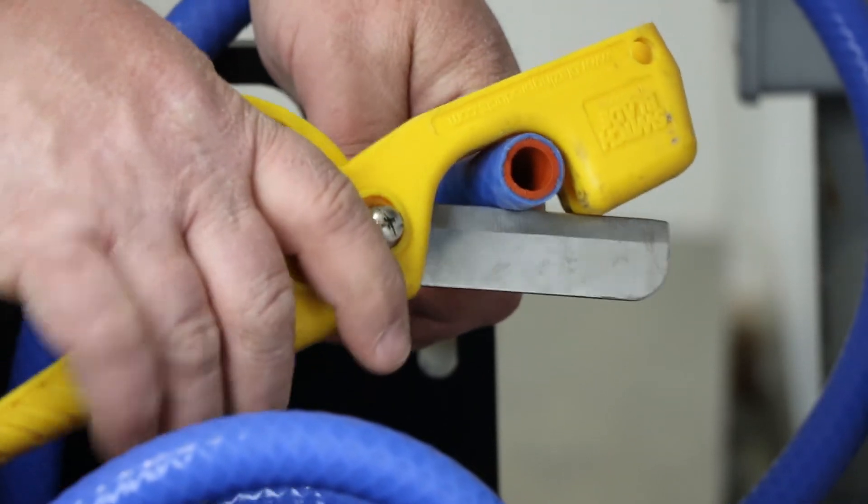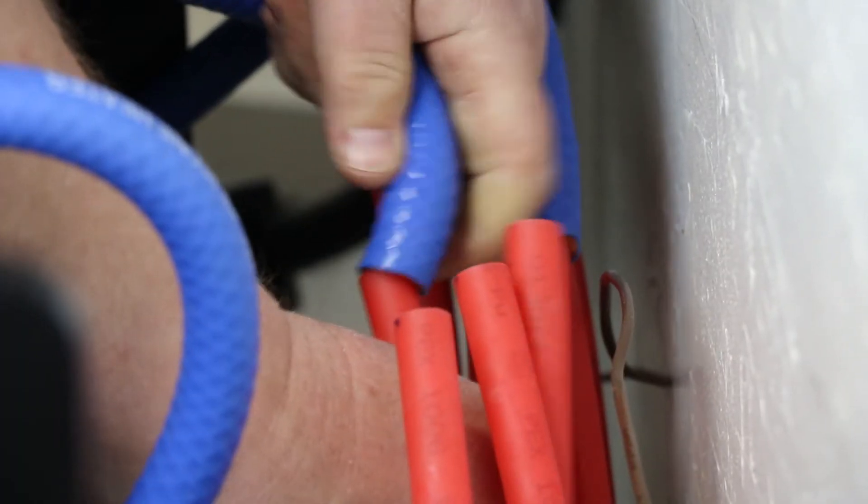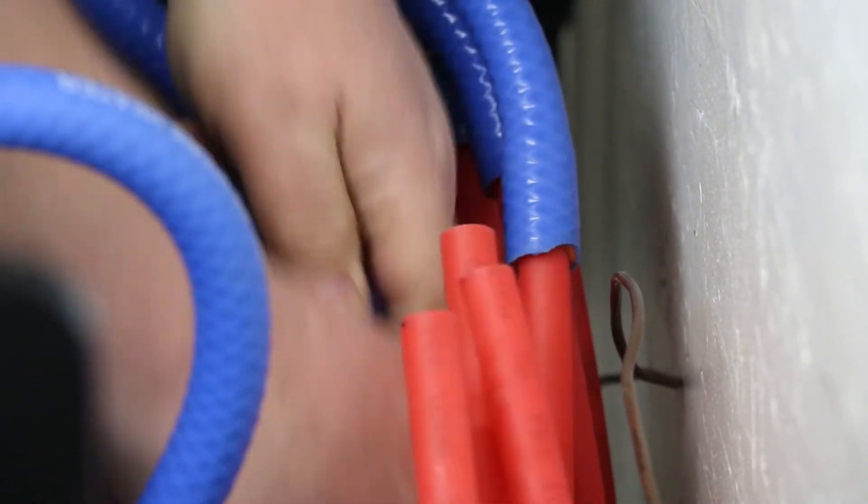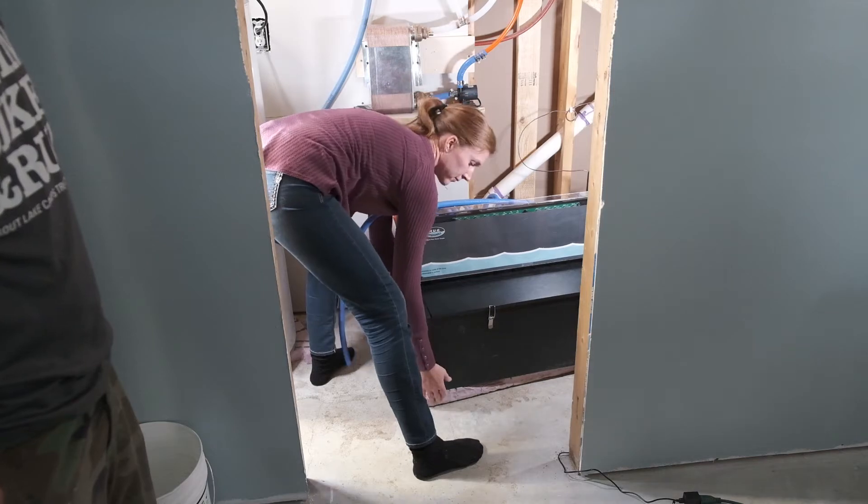First, trim the hoses and PEX pipes as needed to make connecting neat and easy. You may want to leave some slack to allow for ease of moving the tank.